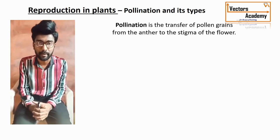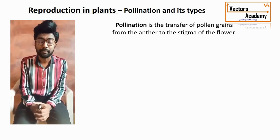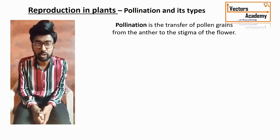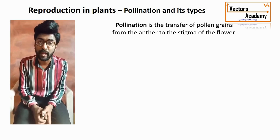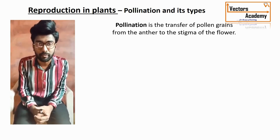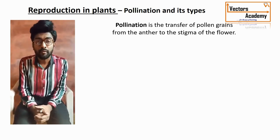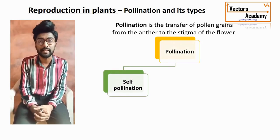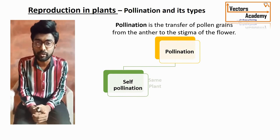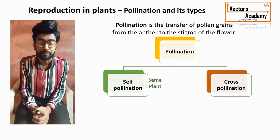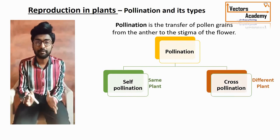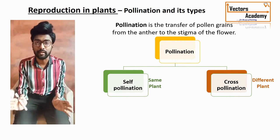Pollination for the very first time was generally studied by the scientist Camerarius. Now when you talk about pollination, there are two different types: first is called self-pollination and second is called cross-pollination.